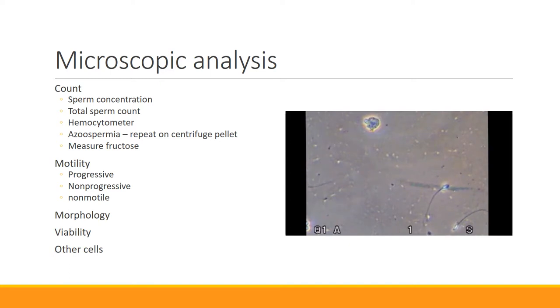Your volume provides information on the testicular and accessory gland function, whereas your total sperm count provides information only on the testicular function alone. Normal sperm concentration ranges somewhere between 15 and 150 million per ml, and normal for the total sperm count is greater than 40 million per ejaculate.